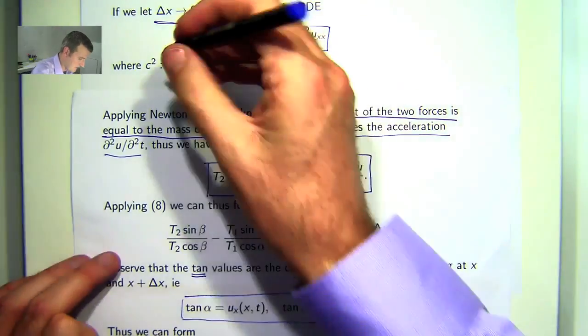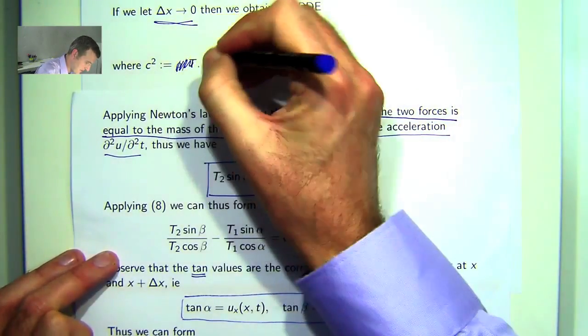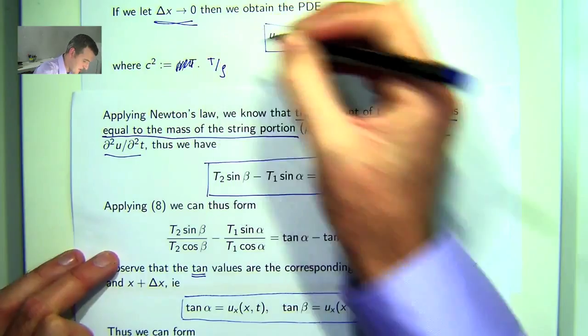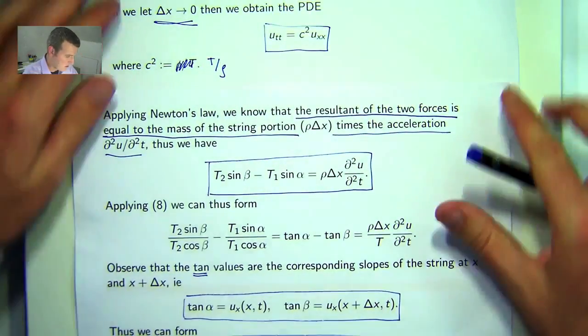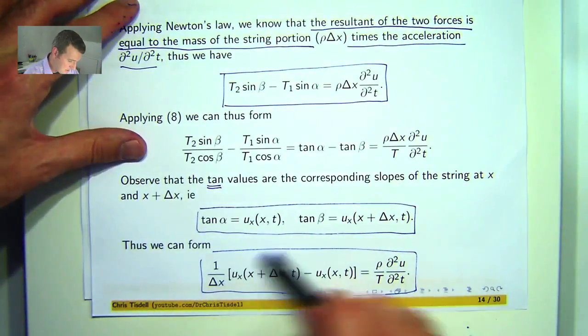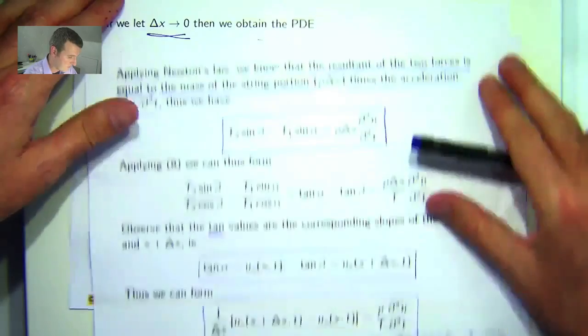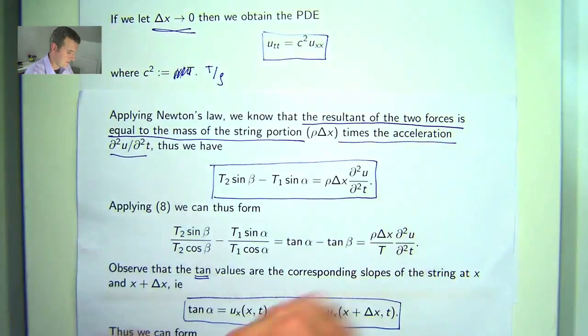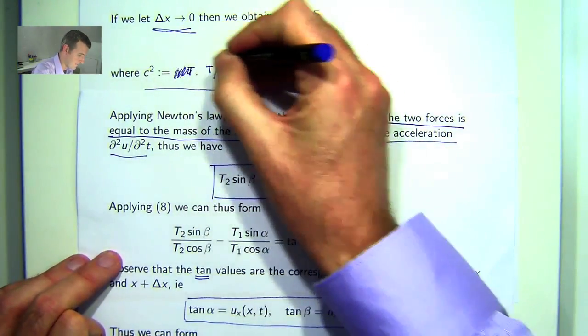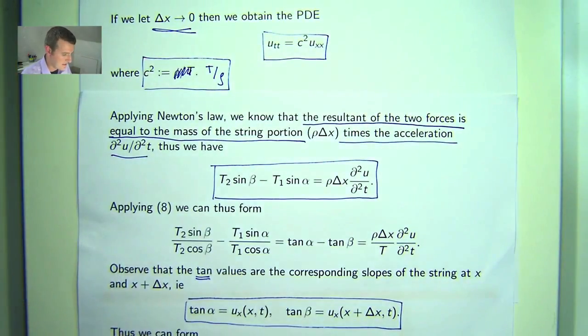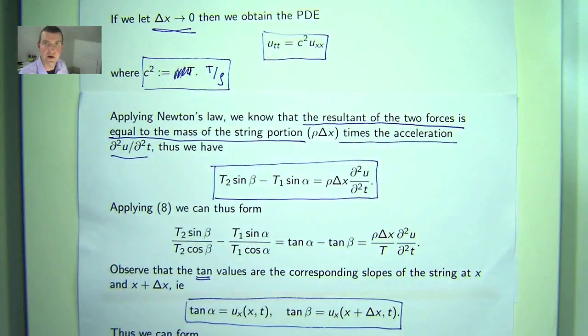That should be the tension over the density. If I let delta x go to zero, this will become u_xx. If I take that to the other side, with T over rho, I'll get the following: u_tt equals (T/rho) u_xx. That, then, is my wave equation.